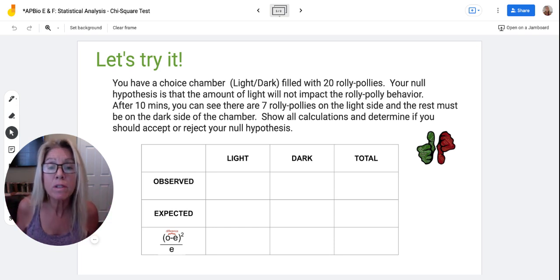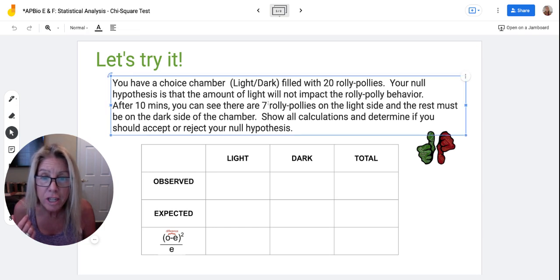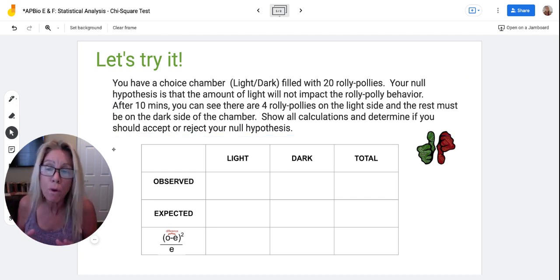But the results that you got after 10 minutes is that there are actually, let me change this. After 10 minutes, you found that there were only four roly-polies on the light side.